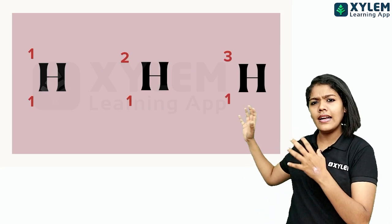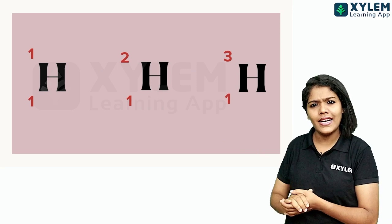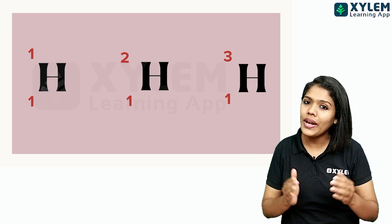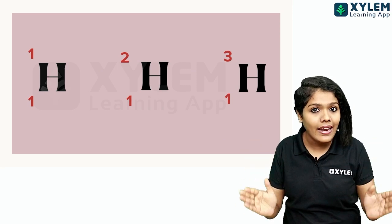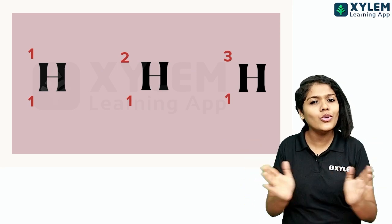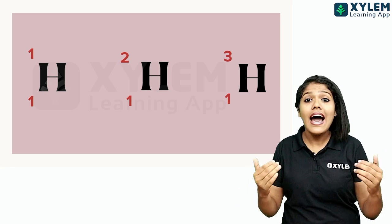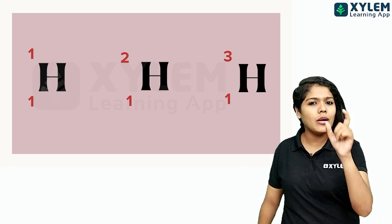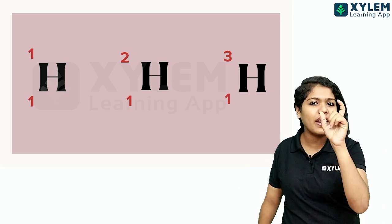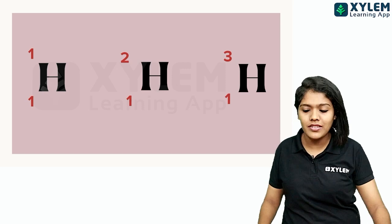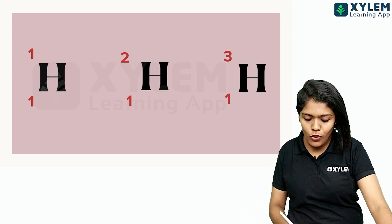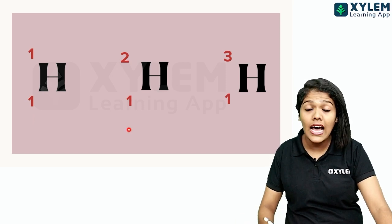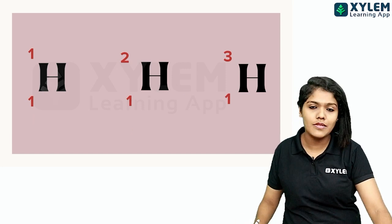The first thing is that three atoms are of one element — the same element. These three are hydrogen atoms, because hydrogen has the symbol H. So these three examples are all hydrogen atoms.